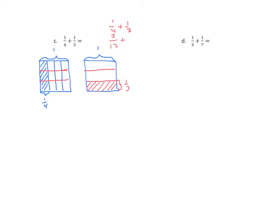Now we're going to do the same with the other rectangle, except we're now going to partition it into four equal parts using vertical lines. Again, we have twelve parts, so twelve is our denominator. And four out of the twelve are shaded. So now we have like denominators — we can add by adding the two numerators: three plus four is seven, and that's seven-twelfths. We use twelfths still because each whole is still divided into twelve parts.